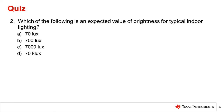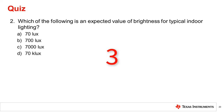Question 2: Which of the following is an expected value of brightness for typical indoor lighting? The correct answer is 700 lux.